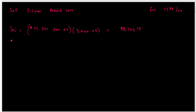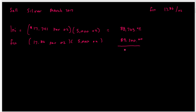Then we figure out the final price. They told us the final contract price is $17.86 per ounce. One contract is 5,000 ounces, so multiplying those out we get a final value of $89,300.